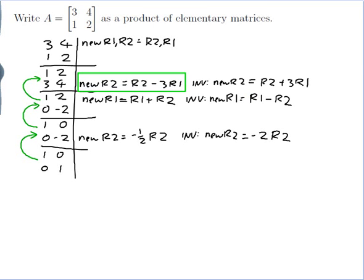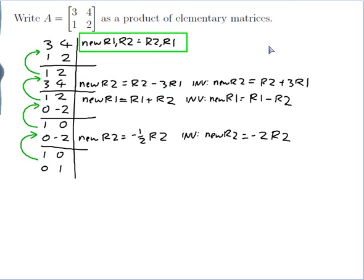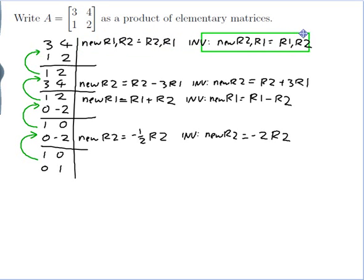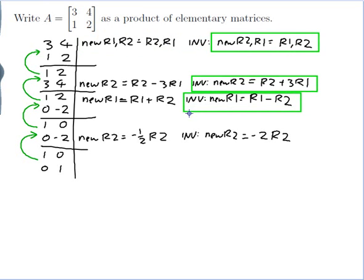And I've got one step left: to get from the identity to A. The inverse of swapping rows is swapping again, since that puts you back where you started. So new row 2 and row 1 is old row 1 and row 2. These four inverse operations are the row operations that go from the identity to A, and I need the elementary matrices corresponding to those row operations.